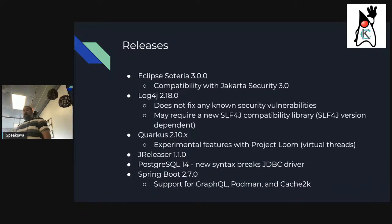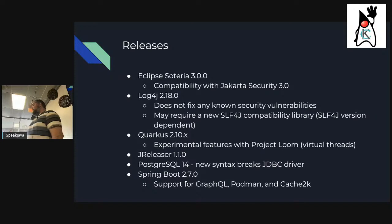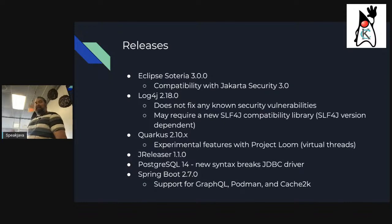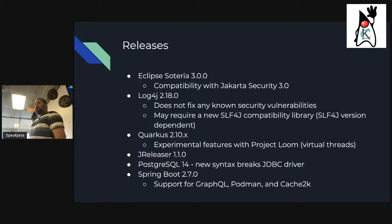In releases: Eclipse Soteria 3.0.0, compatible with Jakarta Security 3.0 in the upcoming Jakarta EE 10 release, includes that OpenID Connect piece. Log4J 2.18.0 is on here as a joke because it actually doesn't have any security vulnerabilities fixed this time. It does require a new compatibility library if you're using SLF4J — the most recent 1.x release, 1.8 or higher — it has a different compatibility layer library now.